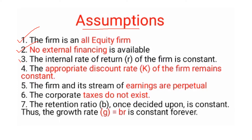The fourth assumption is that the appropriate discount rate K of the firm remains constant. Fifth, the firm and its stream of earnings are perpetual — the firm's earnings will be constant with no major fluctuations. Sixth, corporate taxes do not exist. The retention ratio B, once decided upon, is constant. Thus the growth rate G equals BR and is constant forever.